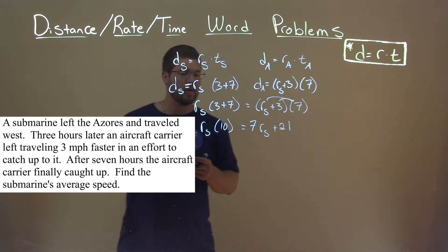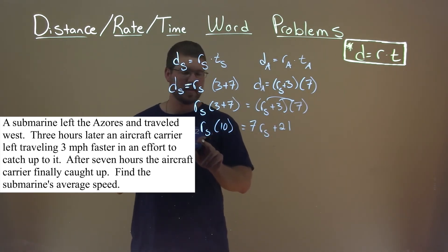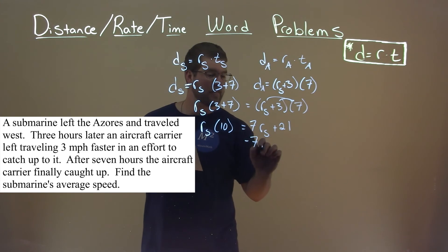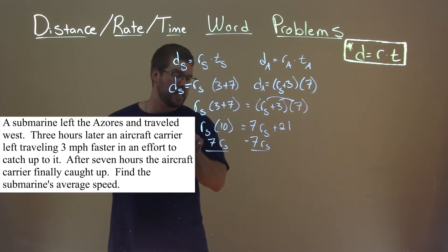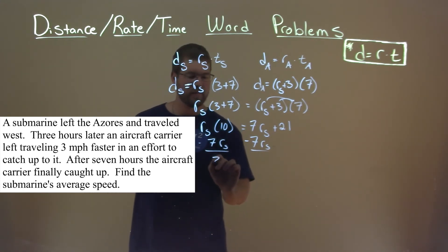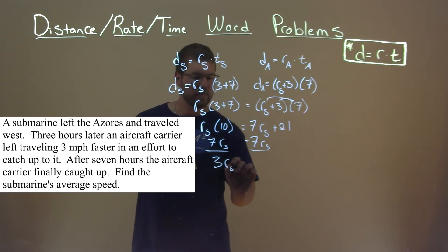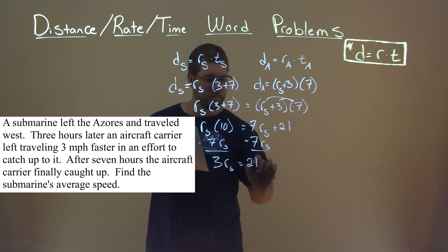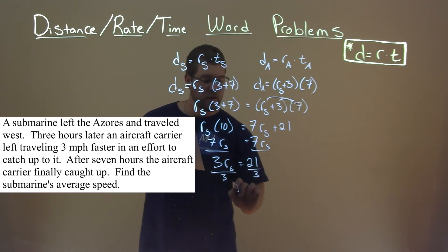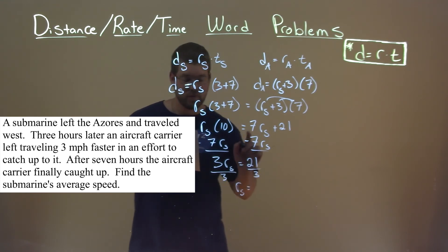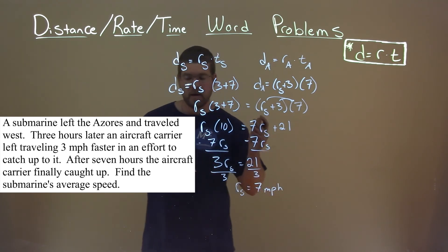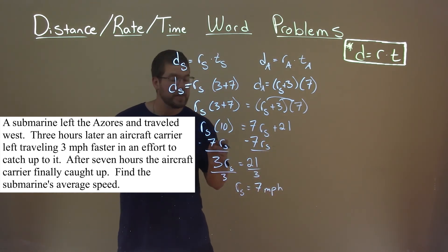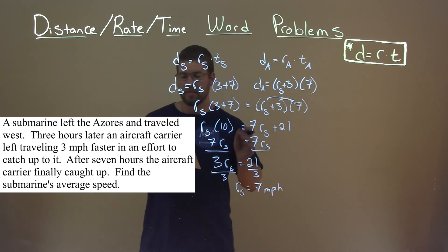Let's combine like terms. We have 10·R_s on the left. Subtracting 7·R_s from both sides gives 3·R_s equals twenty-one. Divide both sides by three, and R_s equals twenty-one divided by three, which is seven. Our units are miles per hour. The submarine's average speed was seven miles per hour.